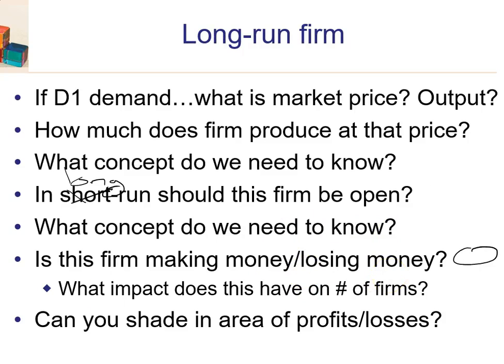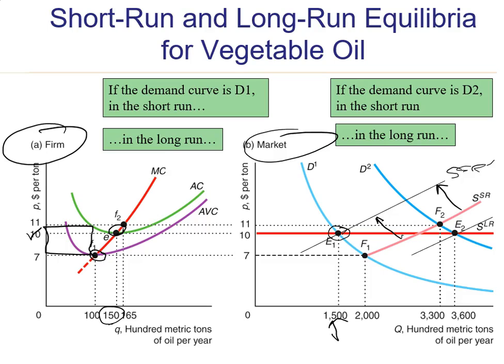When there are no more profits or losses, firms are stable — they're neither entering nor exiting. Profits are zero, the firm stays open, and we've reached long-run equilibrium. All of this came from one image. I'd encourage you to do the same thought process now for demand D2, working through the short-run and long-run transition yourself.